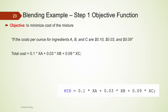Moving on to the objective function, we try to minimize the cost of the mixture. Each ounce of A costs 10 cents, B costs 3 cents, and C costs 9 cents. The total cost is 0.1×xa + 0.03×xb + 0.09×xc. We use MIN in Lingo to minimize the total cost, as shown on the screen.